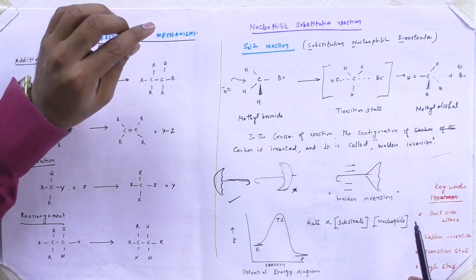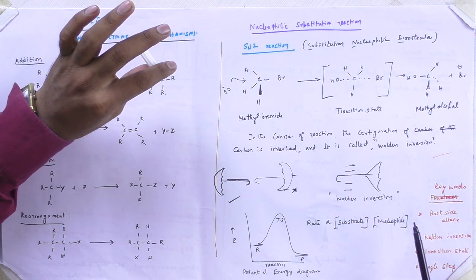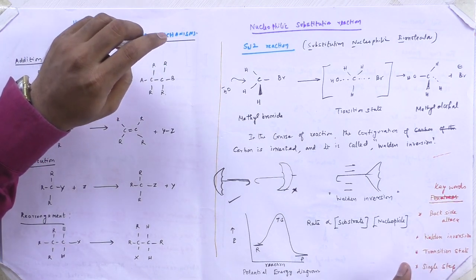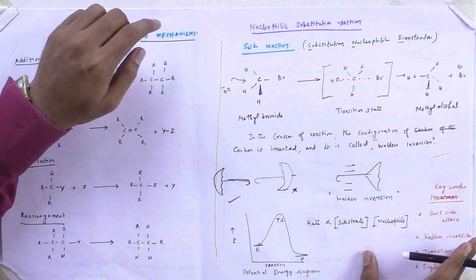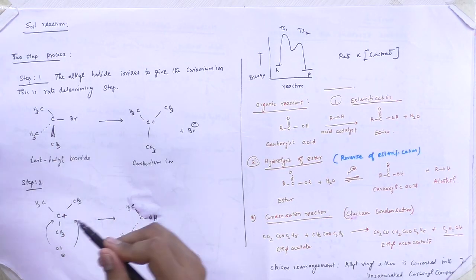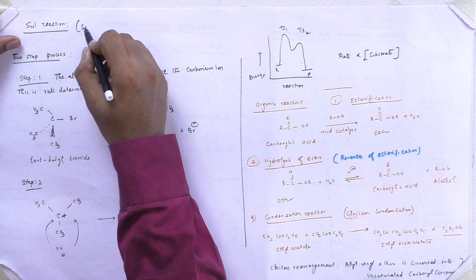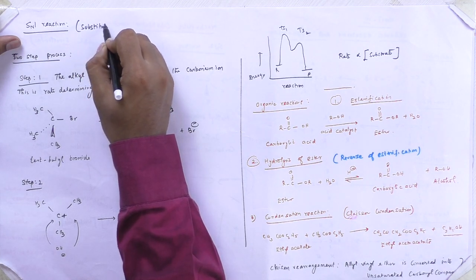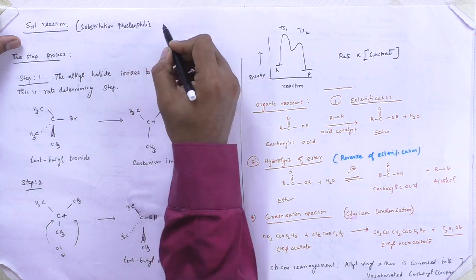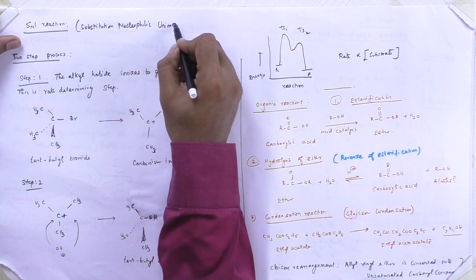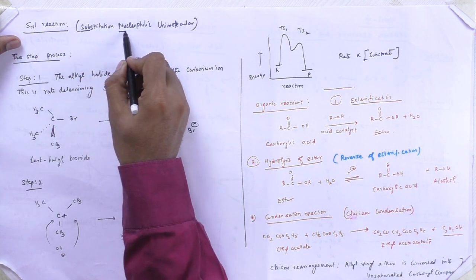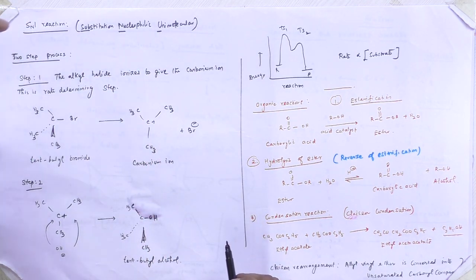Note that the nucleophile carries a negative charge, the electrophile carries a positive charge, and a free radical has a free electron. Next is SN1 reaction, which stands for Substitution Nucleophilic Unimolecular reaction.